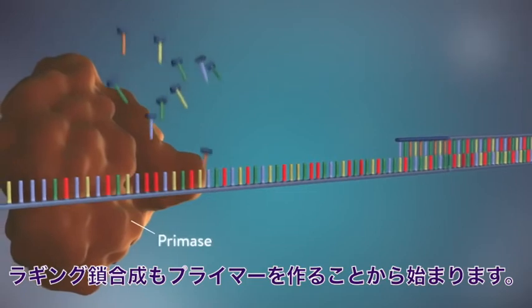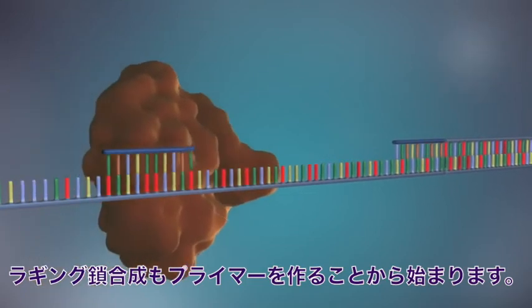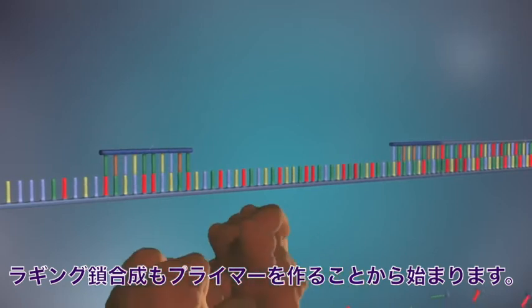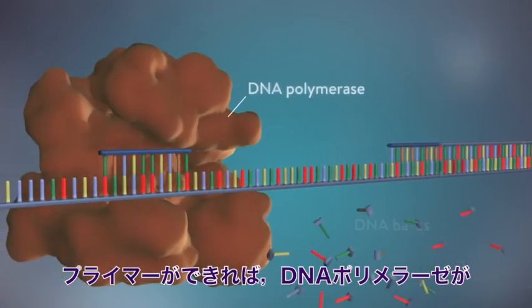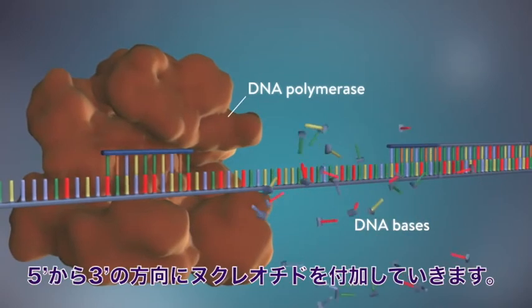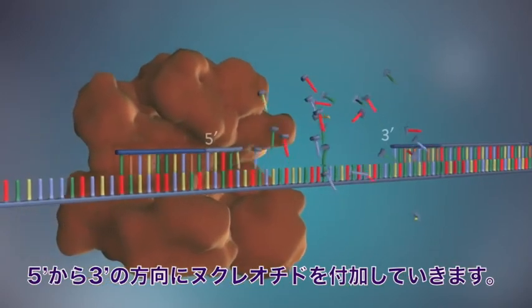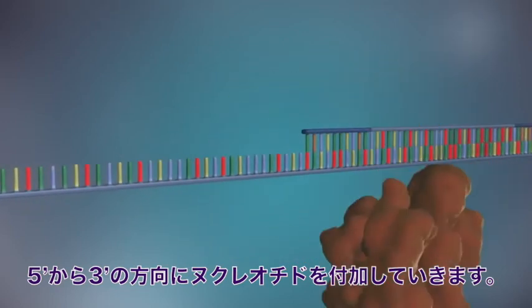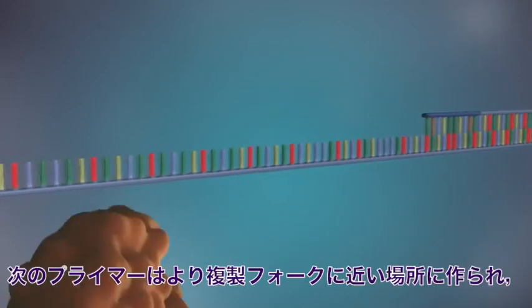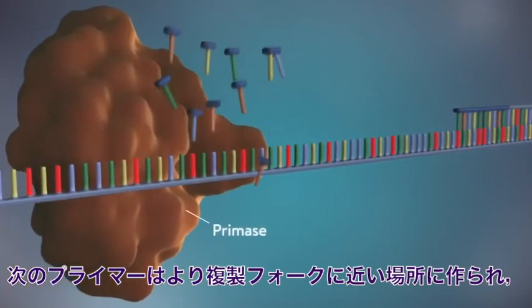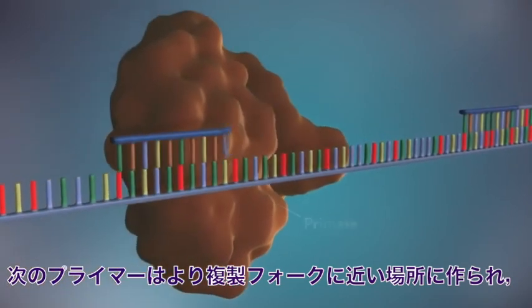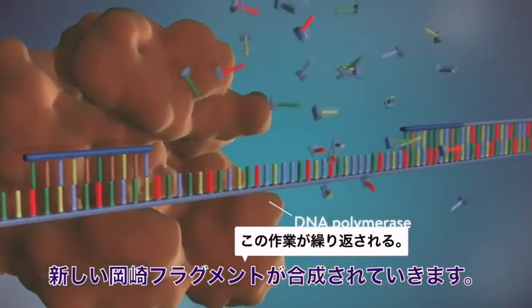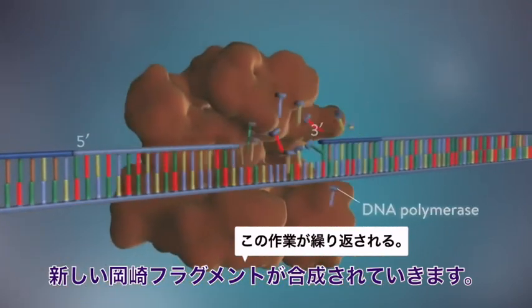Each fragment is started with an RNA primer. DNA polymerase then adds a short row of DNA bases in the five prime to three prime direction. The next primer is then added further down the lagging strand. Another Okazaki fragment is then made and the process is repeated again.